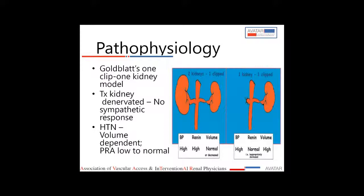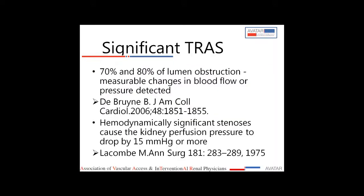Unlike the classic one-kidney, one-clip model where hypertension is predominantly renin-dependent. Not all TRAS needs to be treated. Latex cast experiments have shown that only when you narrow the graft renal artery by more than 70 to 80%, are there measurable changes in blood flow or blood pressure. So perfusion is affected only when stenosis is beyond 70 to 80%. Between 50 to 70%, you intervene only when clinical features are present.